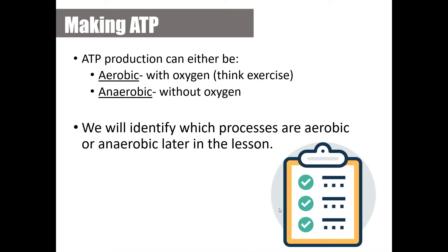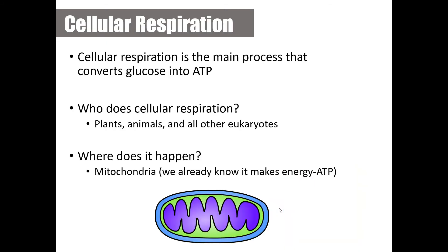ATP production can either be aerobic or anaerobic. Aerobic means with oxygen — think of aerobic exercise to help you remember. Anaerobic is without oxygen. We will get into more detail in the next lesson when we talk about fermentation.